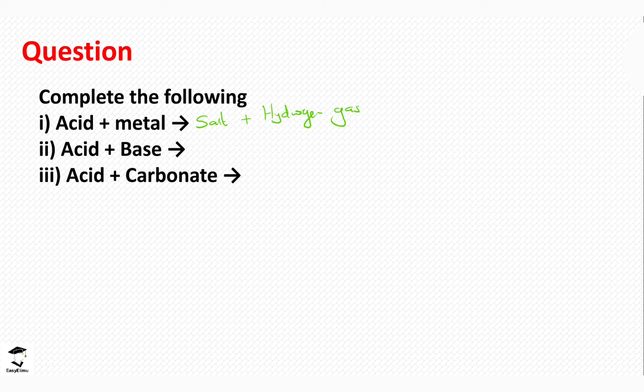Acid plus bases: when acids and bases react they form salt and water, which is also referred to as a neutralization reaction because the process produces neutral products. We can tell neutral products using indicators. The most common indicator used in this reaction is phenolphthalein, but we only use it when reacting hydroxides in solution state with the acid, to enable us to know the end point. For oxides, which are also bases in solid state, we do not need an indicator because the reaction is more visible.